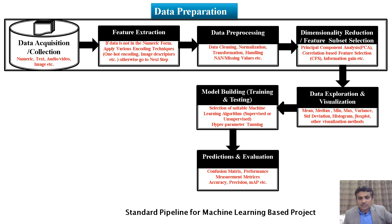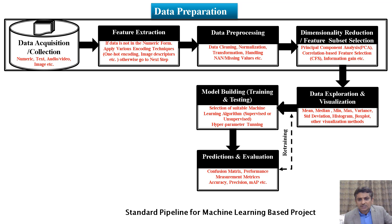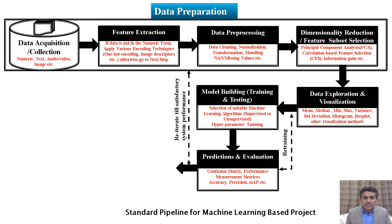The next step after model building is prediction and evaluation. Here we look into model predictions and evaluation, which can be measured using a confusion matrix and different performance metrics such as accuracy, precision, or mean average precision in case of image-related data. If the model's prediction evaluation is not satisfactory, we may retrain the model. If suitable results are obtained after retraining, we may proceed; otherwise, we reiterate until satisfactory system performance is achieved, which may include repeating data preparation and earlier steps.